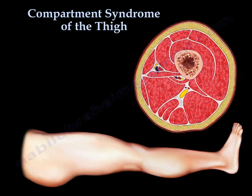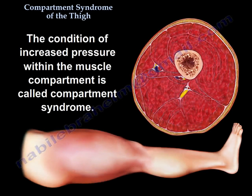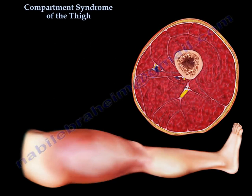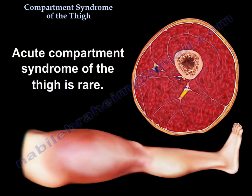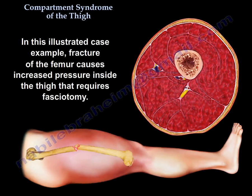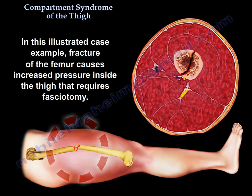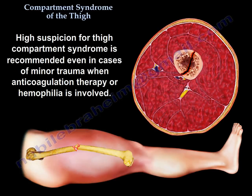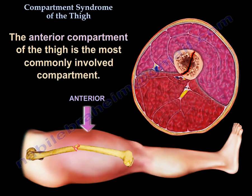Compartment Syndrome of the Thigh: the condition of increased pressure within the muscle compartment. Acute Compartment Syndrome of the Thigh is rare. In this illustrated case example, fracture of the femur causes increased pressure inside the thigh that requires fasciotomy. High suspicion is recommended even in cases of minor trauma when anticoagulation therapy or hemophilia is involved. The anterior compartment of the thigh is the most commonly involved compartment.